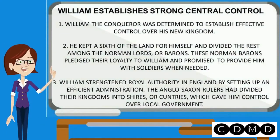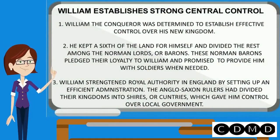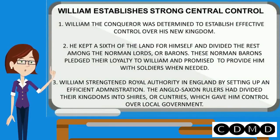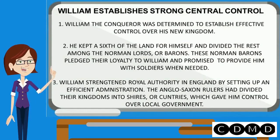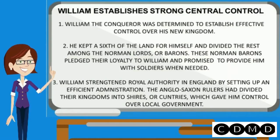William establishes strong central control. William the Conqueror was determined to establish effective control over his new kingdom. He kept a sixth of the land for himself and divided the rest among the Norman lords, or barons. These Norman barons pledged their loyalty to William and promised to provide him with soldiers when needed.